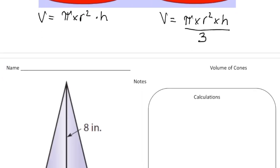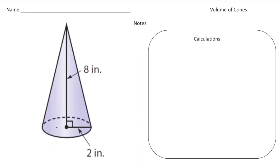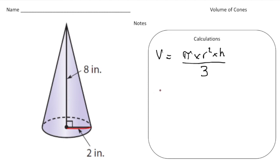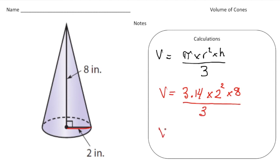Now let's solve a problem. We have a cone with a radius of 2 and a height of 8. Let's write down the formula: volume equals pi times radius squared times the height, divided by 3. That's what makes a cone a cone — you divide by 3. So now let's plug in what we know. The volume is going to be 3.14 times 2 squared, times the height of 8, divided by 3.